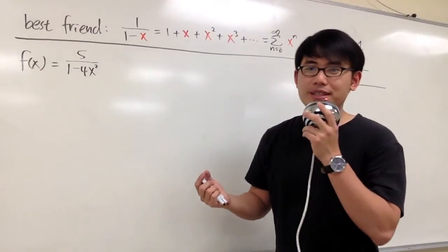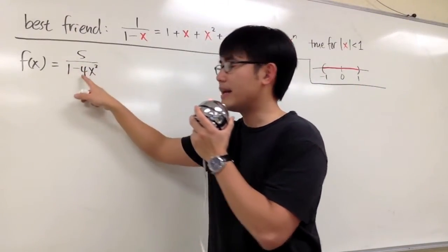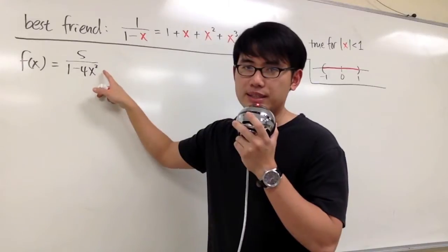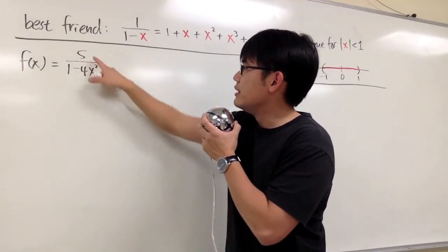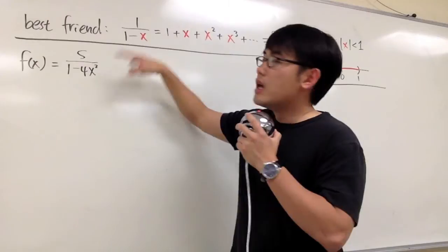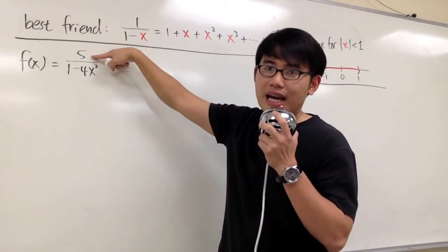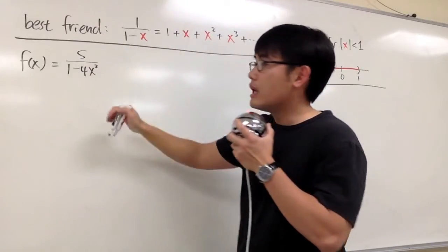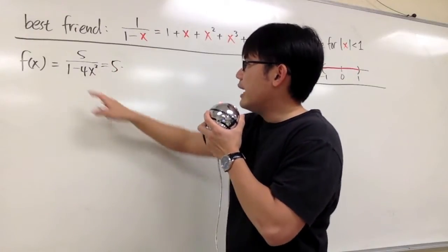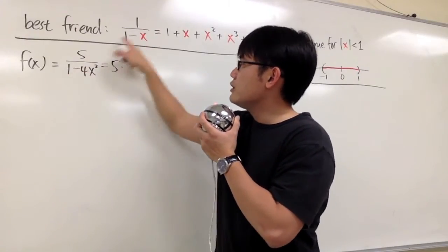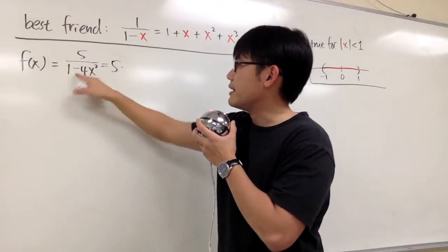We are going to write a power series expansion for the function 5 over 1 minus 4x squared. To do that, we just have to match this with our best friend — the geometric series. Here we have the 1 on the top, but the function here has a 5. The ones in the denominator match, and we have the minus sign.